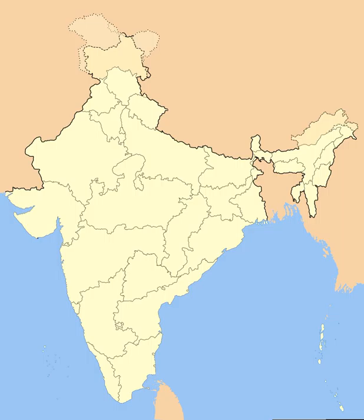The area of Jammu and Kashmir is 222,236 km² according to Indian claims, of which 101,387 km² are under Indian administration. Dehradun is the interim capital of Uttarakhand. The town of Gersane is envisaged as the state's new capital.